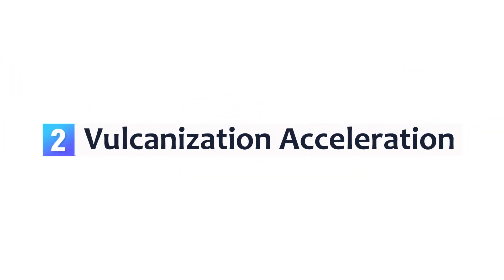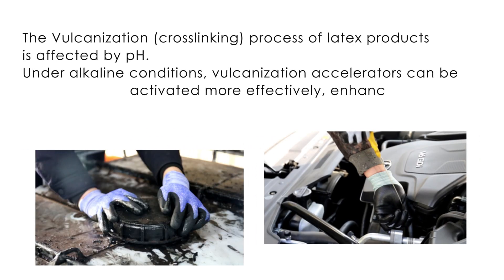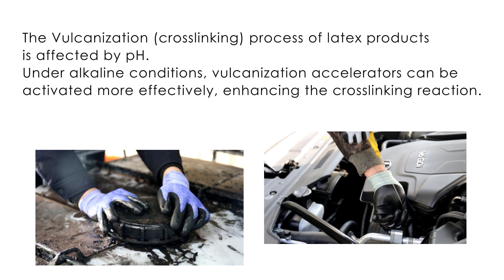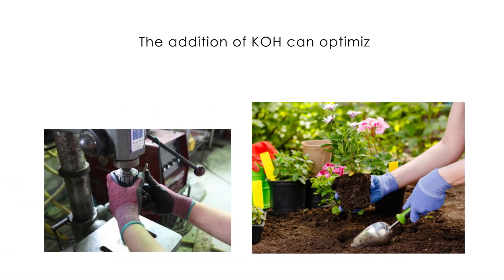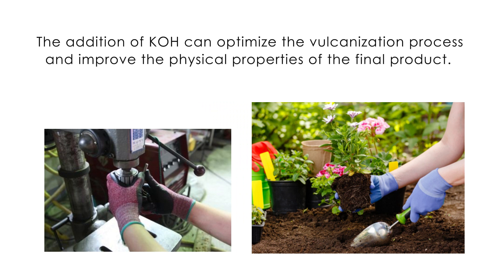Vulcanization acceleration. The vulcanization, or crosslinking, process of latex products is affected by pH. Under alkaline conditions, vulcanization accelerators can be activated more effectively, enhancing the crosslinking reaction. The addition of KOH can optimize the vulcanization process and improve the physical properties of the final product.